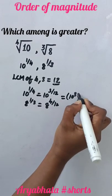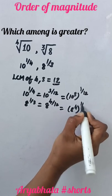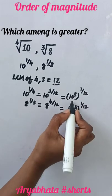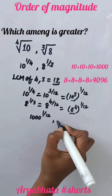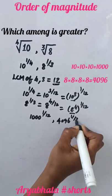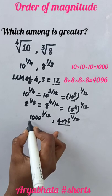10 to the power 3, the whole power 1/12, and 8 to the power 4, the whole power 1/12. With common power 1/12, we have 10 cube is 1000 to the power 1/12, and 8 to the power 4 is 4096 to the power 1/12. Now we can find the greatest number.